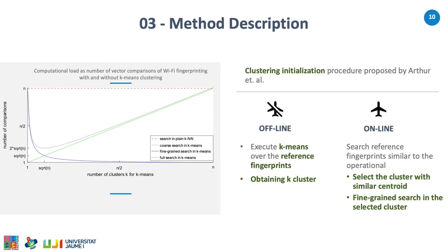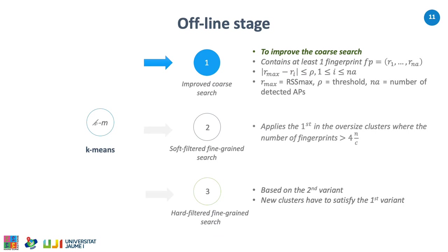In the figure, we can see the computational load in terms of number of vector comparisons for Wi-Fi fingerprinting with and without k-means clustering. In the offline stage, the three variants we propose determine the clusters and their centroids using k-means. The first variant is devoted to improving the coarse search. In the offline stage, this variant finds a function F1 that maps an AP to the set of clusters that are relevant for it, storing all the mappings. We need to find the relevant clusters which contain at least one fingerprint. The defining threshold has to be greater than or equal to the maximum radius signal strength minus the current signal strength, and i has to be between 1 and the number of detected APs.